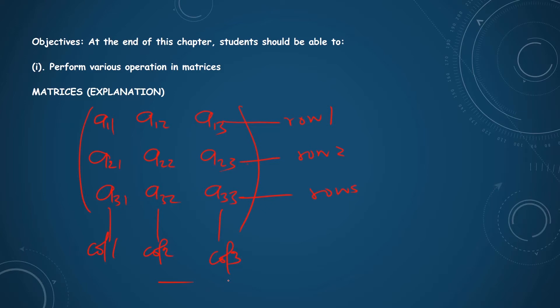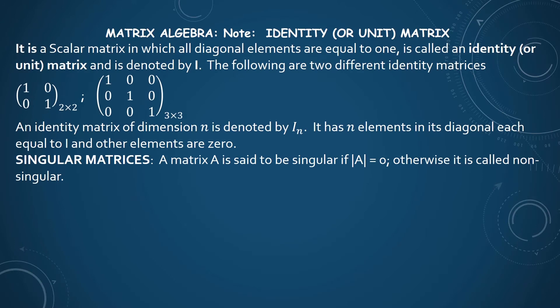An example is your classroom arrangement — we have the rows and the columns and that forms a matrix. Remember, the plural is matrices. We are going to be considering the algebra of matrices, which involves addition, subtraction, and multiplication. The multiplication is divided into two: scalar multiplication and matrix multiplication. But first, I would like us to look at some important terms used in the matrix.